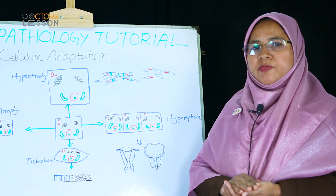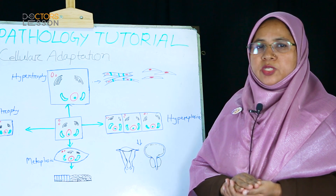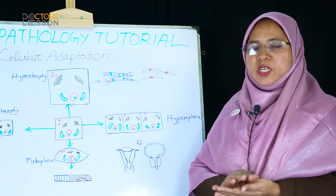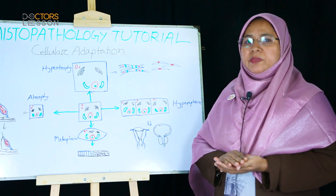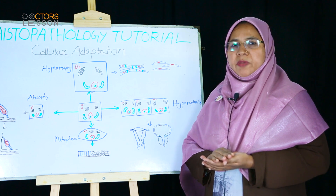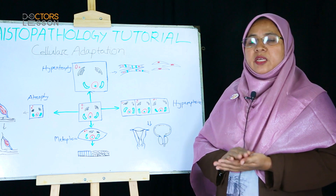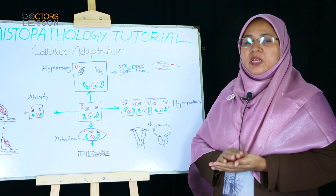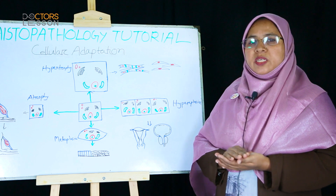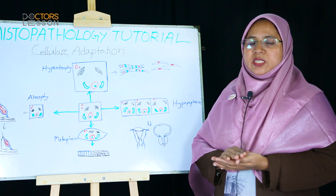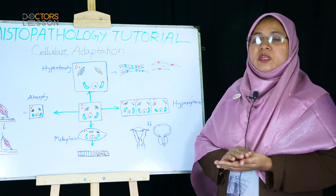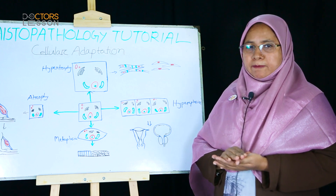The human body is composed of millions of cells. Cells and their constituents function in a harmonious way to maintain the normal functional activity of the human body. Sometimes this harmonious environment is altered — the cell is exposed to many adverse situations such as increased functional demand, diminished blood supply, loss of innervation, chronic irritation, etc. In this situation, an altered steady state is achieved by cells that allows them to survive and function normally. This is called cellular adaptation.